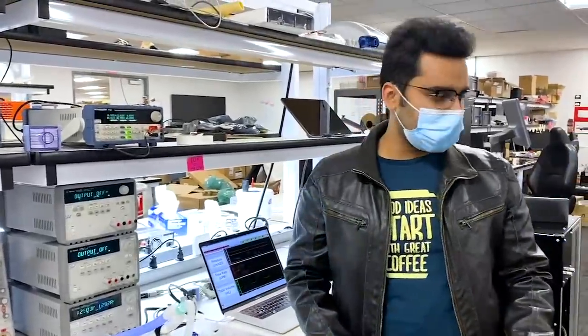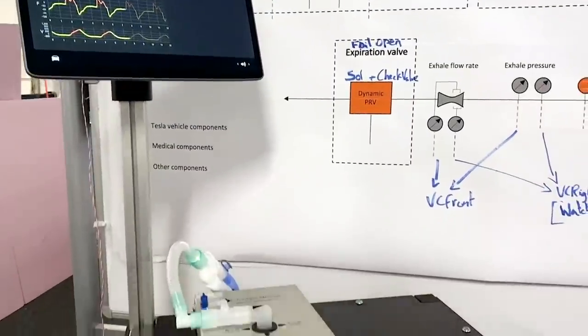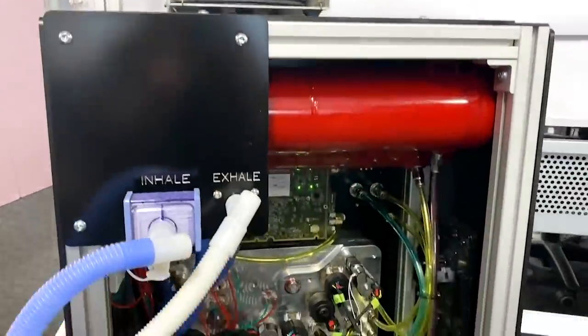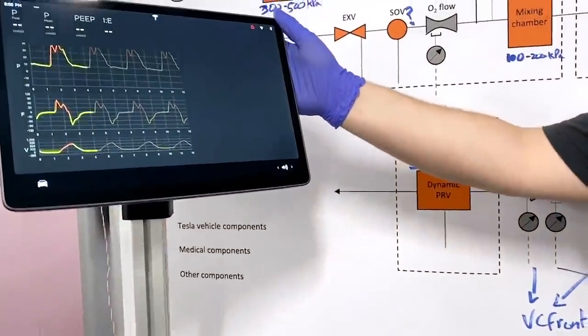And now I'm going to put you over to Ben who's going to show you the packaged version of the same. This system is powered by the Model 3 infotainment system. Up here at the top, we have a Model 3 center display touchscreen.